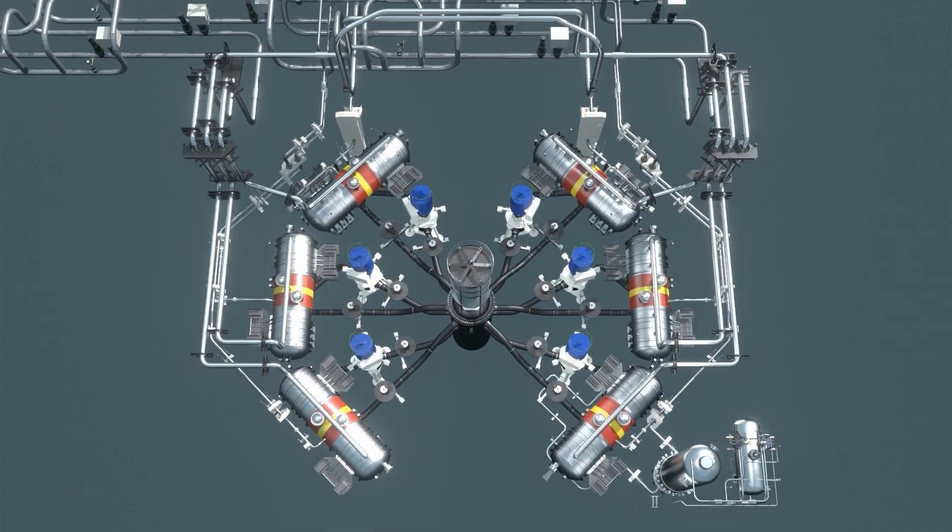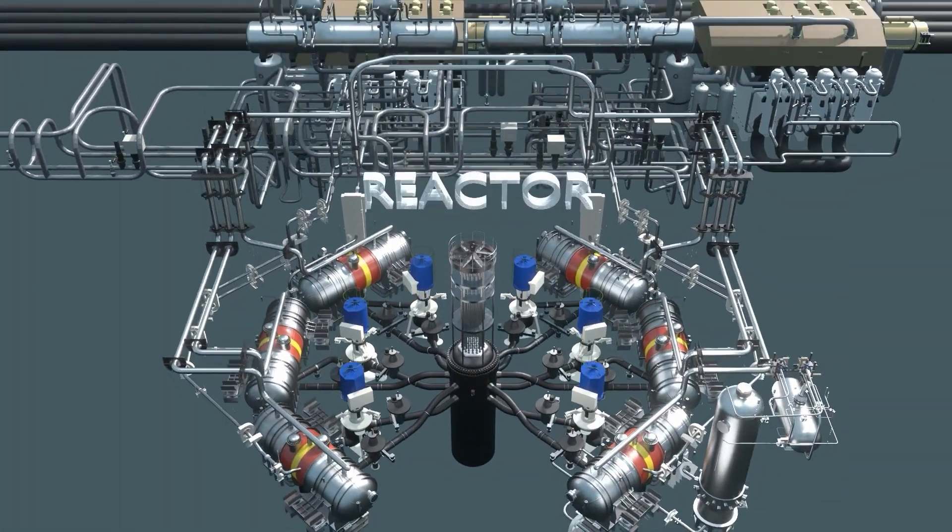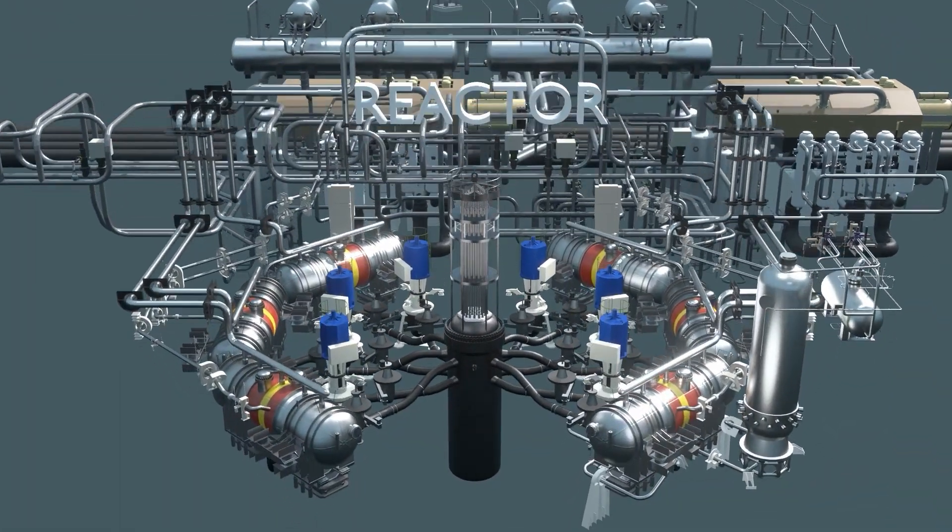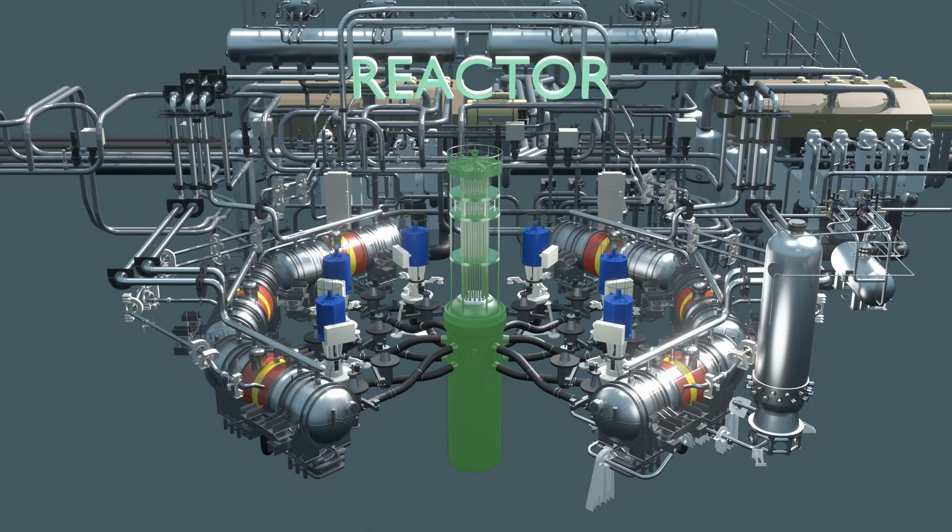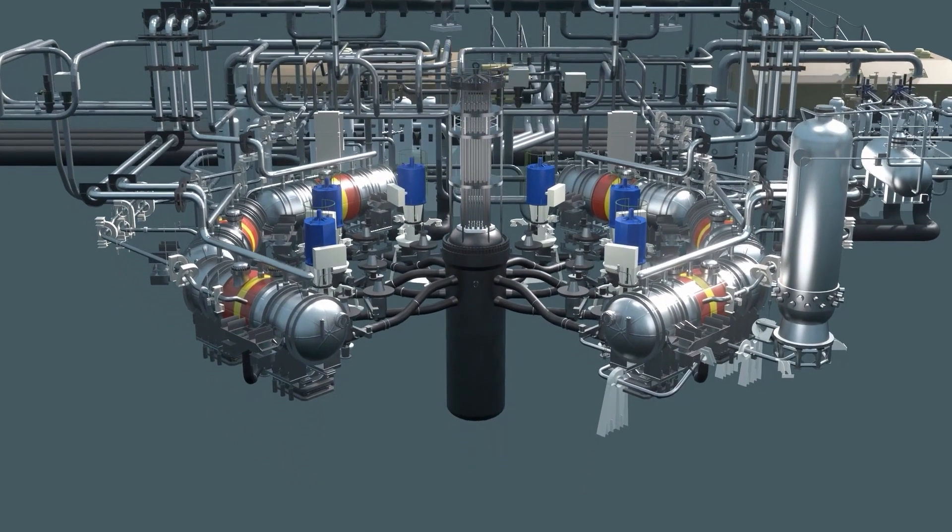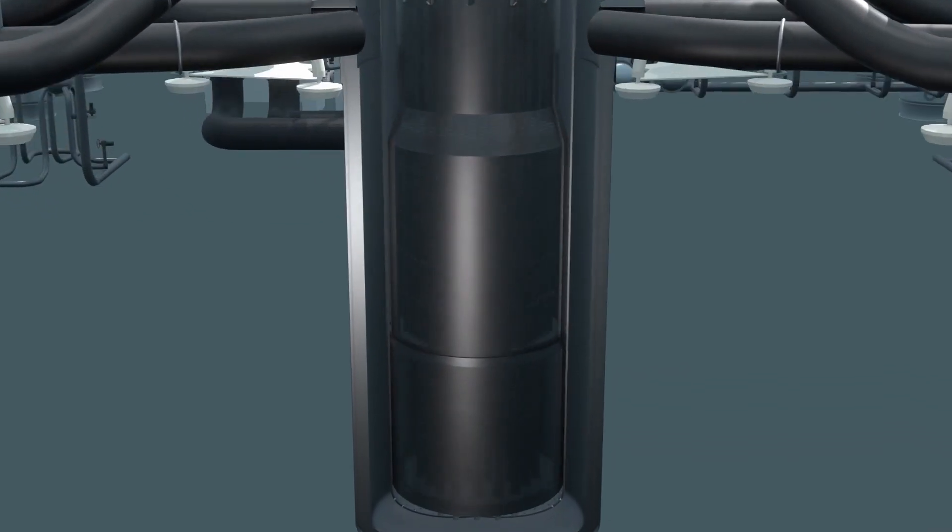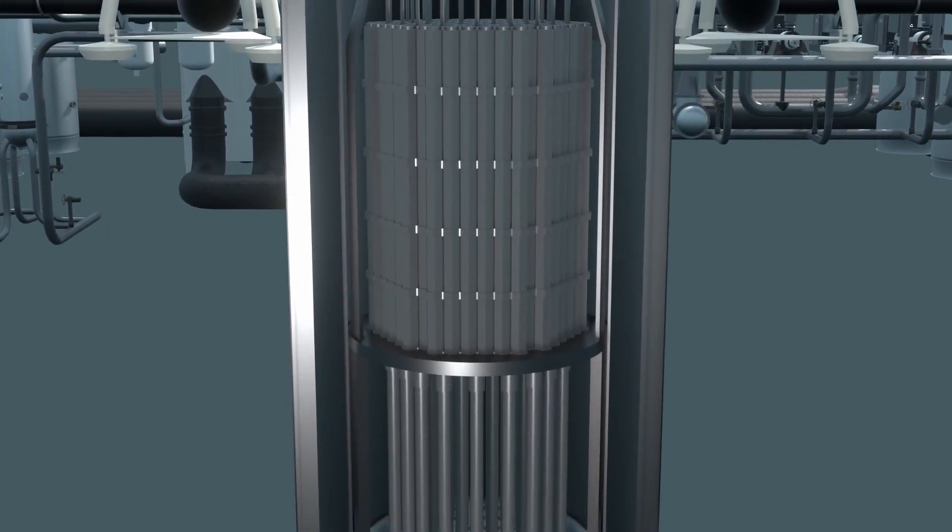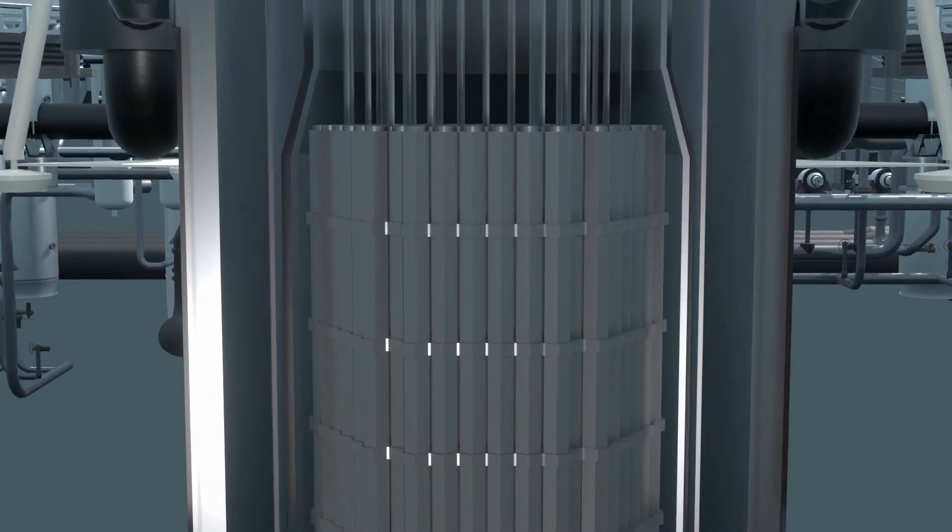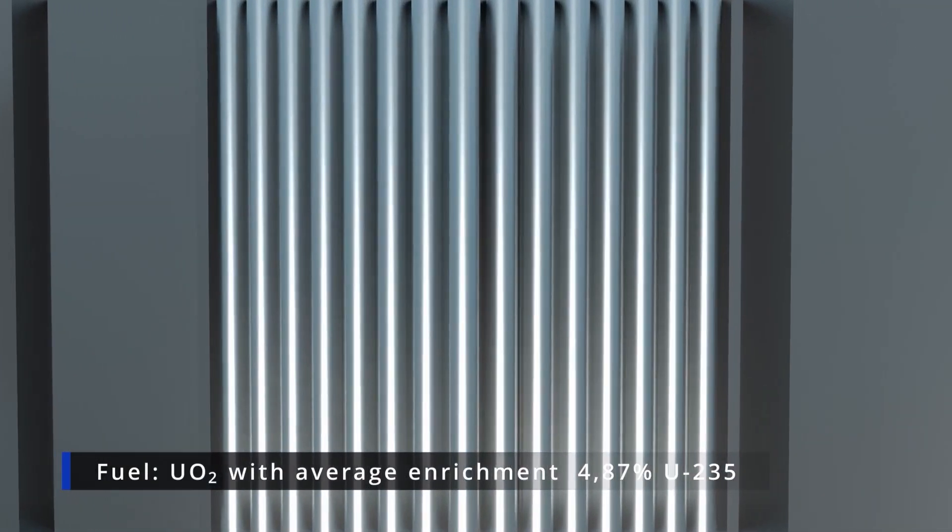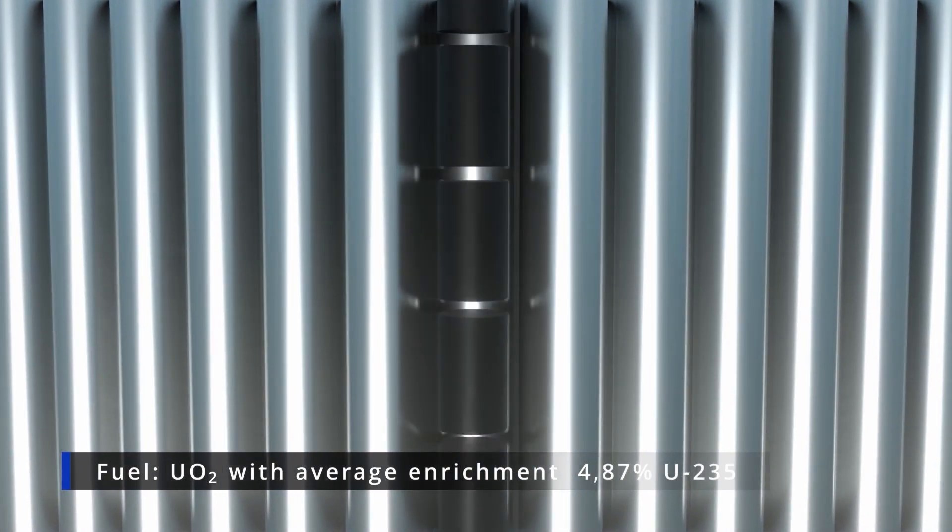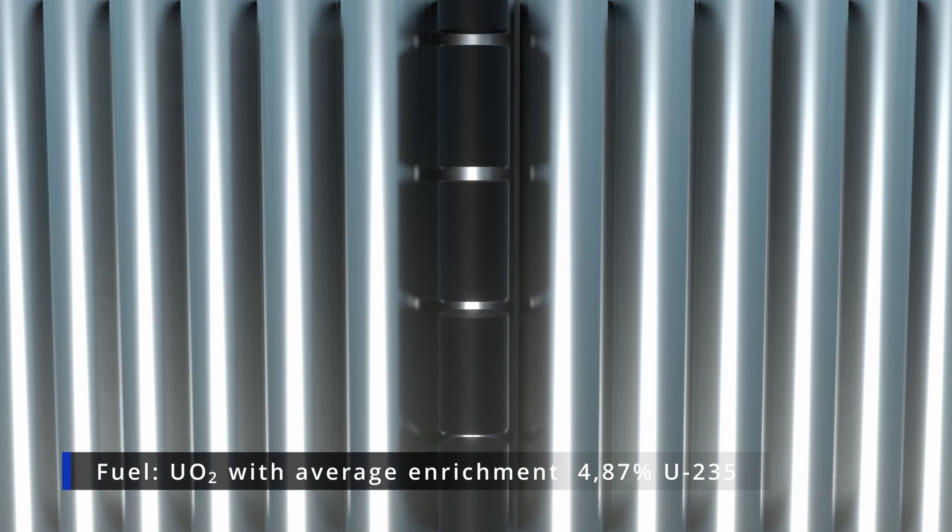It all starts in the reactor. Nuclear fuel is the source of the heat we need to turn water into steam that spins the turbines. The enriched uranium, in the form of fuel pellets, is hermetically sealed in the fuel rod. 126 rods make up one fuel cartridge. The fuel undergoes a fission reaction in which the uranium nuclei fission and release a lot of heat energy.